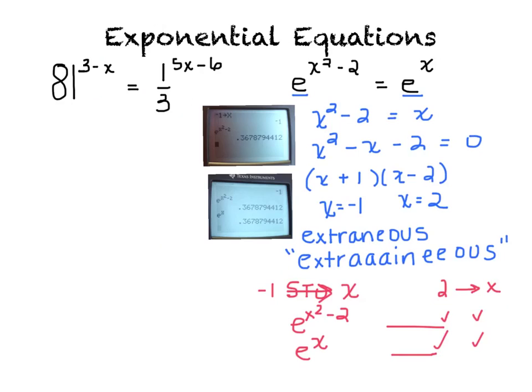You can see on the left: store one as x, then type e to the x squared minus two and e to the x — they are both equal, so negative one works. I also checked two and two works as well, so both x values are valid solutions.